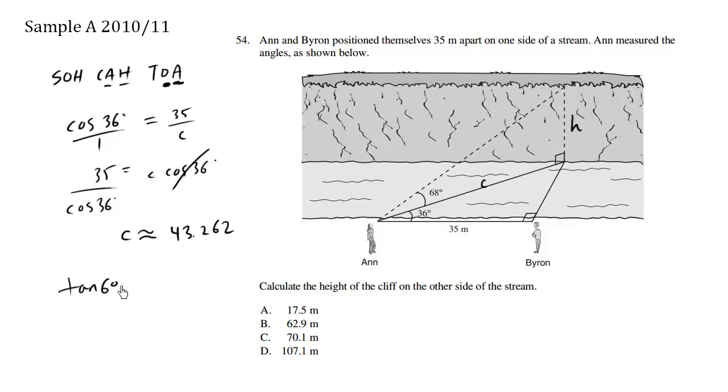So tan 68 equals opposite over adjacent, which is H over adjacent, which is 43.262. Multiply both sides by the denominator here, and we have the answer. H is approximately equals to 43.262 tan 68 degrees.